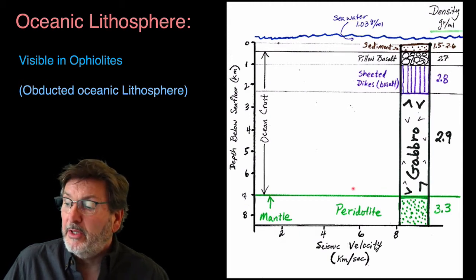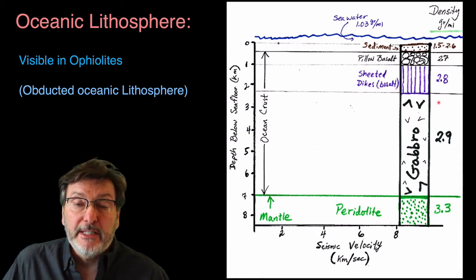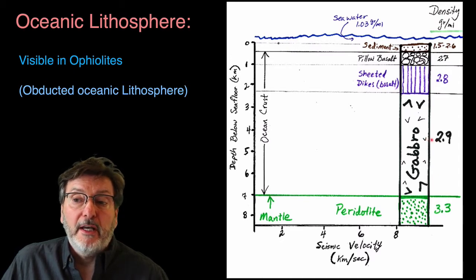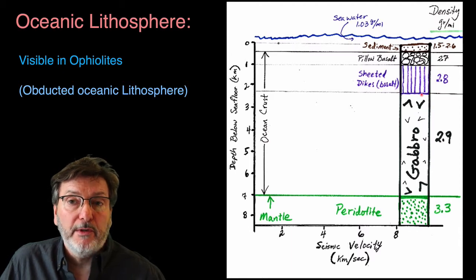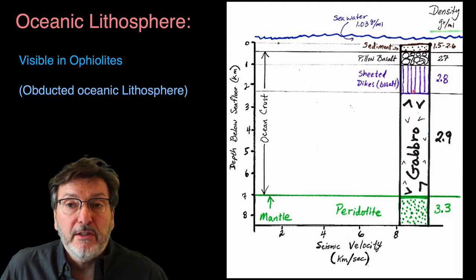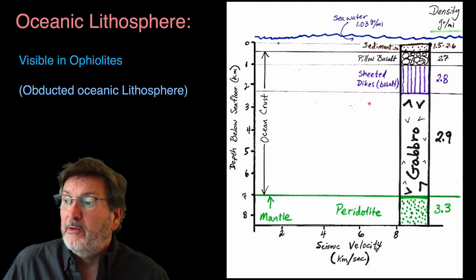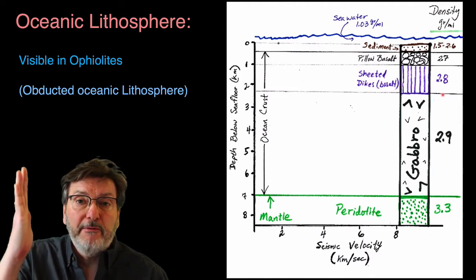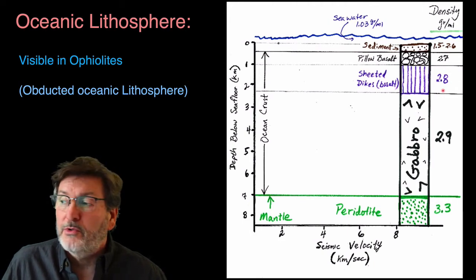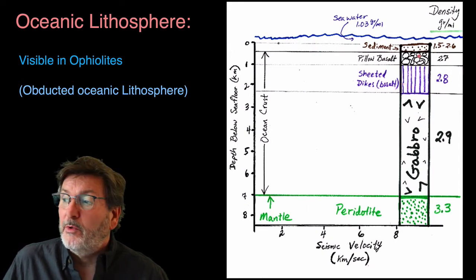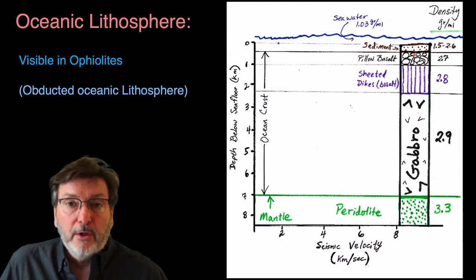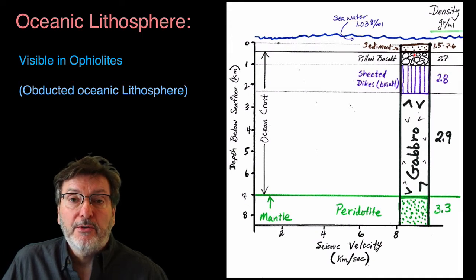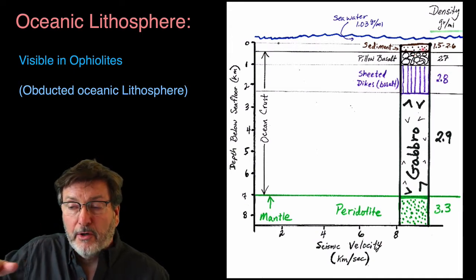The boundary between the mantle and the crust is the Moho — the Mohorovičić discontinuity. Above it we have crystalline ocean crust — gabbro, which has the texture of a granite cooled very slowly beneath the surface. Material that reaches near the surface forms basalt. First we have feeder dikes — tubes or pipes feeding mafic magma to the surface. When the magma cools and fills in, it leaves basalt. We have sheeted dikes, which are vertical structures in igneous rocks, and wherever that magma reached the surface it forms volcanic textures.